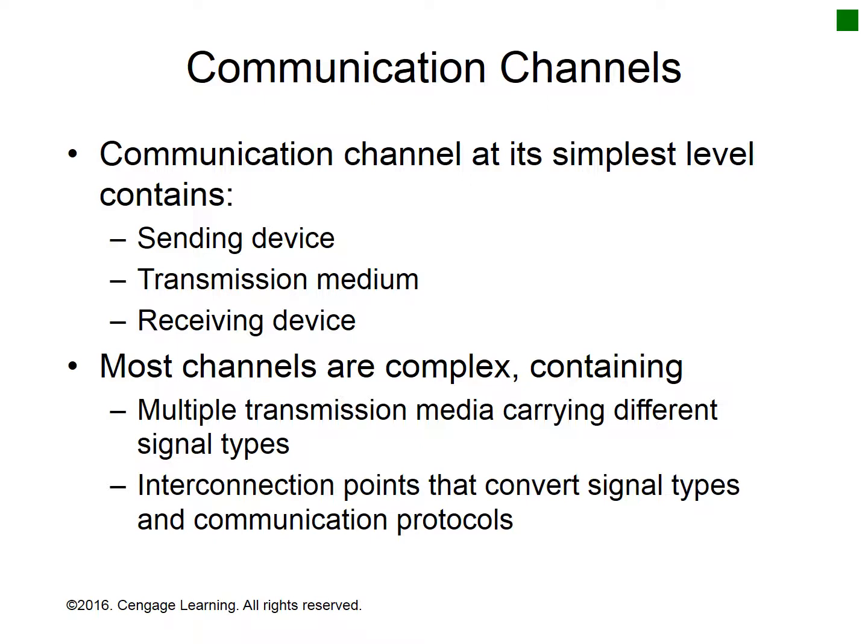Frequency division multiplexing divides a broadband channel into several narrow band channels. Sender and receiver must synchronize clocks to ensure that they use the same time periods and boundaries to encode and decode bit values. A single shared clock is the most reliable synchronization method, but it requires sending clock pulses continuously from sender to receiver.